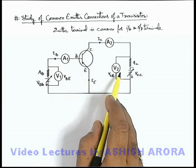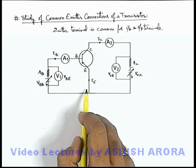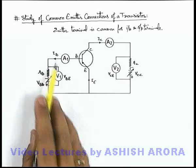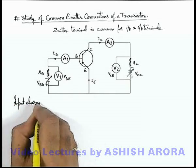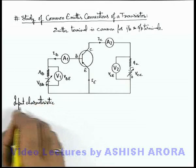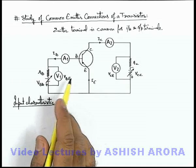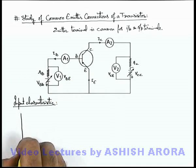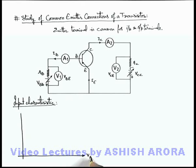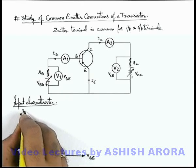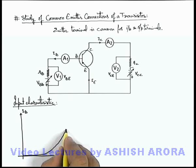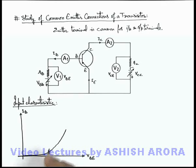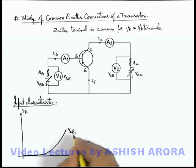To draw the input and output characteristics of the common emitter connection, first we plot the variation of base current with base-emitter voltage, which we term as the input characteristic. This input characteristic will look similar to that of a forward biased PN junction, because the base-emitter junction is forward biased. The curve rises very little up to the knee point, after which the current increases. This is plotted at a specific value of collector-emitter voltage, VCE1.